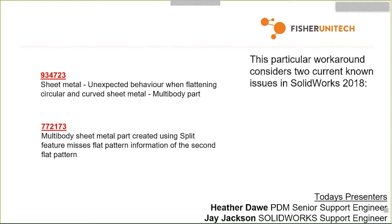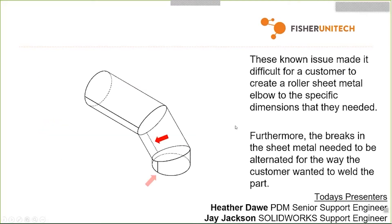And SPR 772-173 says that with a multi-body sheet metal part created using the split feature, sometimes you'll miss flat pattern information for the second flat pattern or subsequent flat patterns. This can create a predicament for specific models. The case in point is a customer who needed to create a rolled sheet metal elbow with breaks and splits in each section so it could be flattened, alternated for the specific way he was welding. There was a workaround found, actually from one of our employees here at Fisher, but it wasn't exactly the best way to go about it.